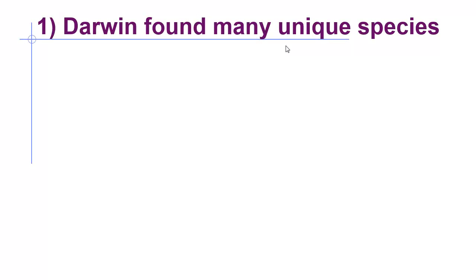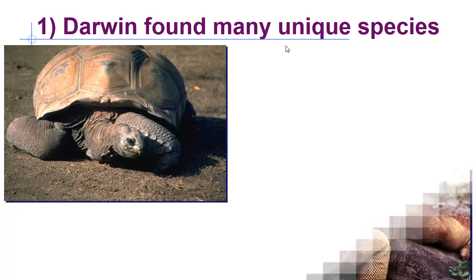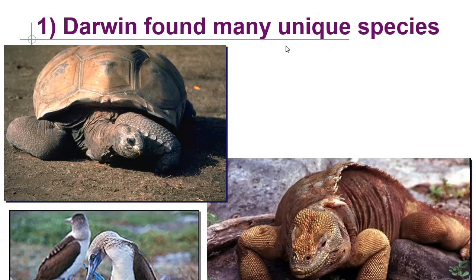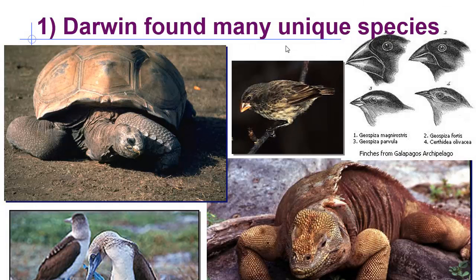Here are a few examples of some of the unique species that Charles Darwin found. One of them was the giant tortoise. These tortoises are absolutely humongous — they're roughly about three feet tall, to put it in perspective. He also found some bizarre lizards and reptiles and some birds. More specifically, he found a species of bird called the finches, where they all had different sized beaks. And we'll focus on that in a little bit.